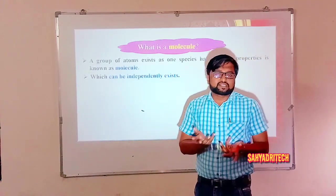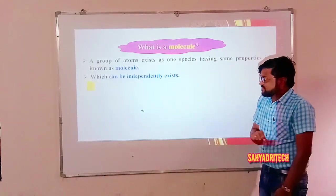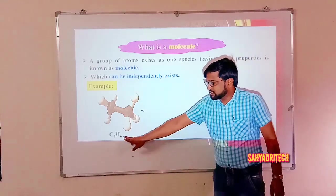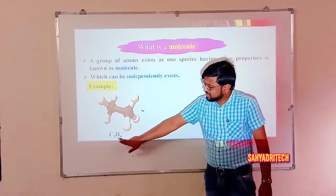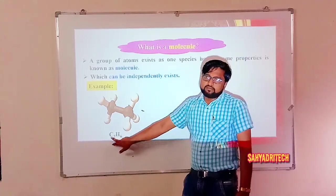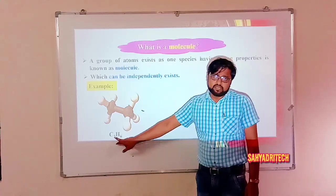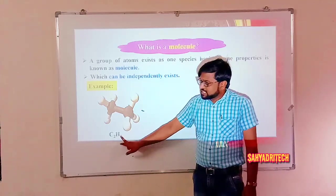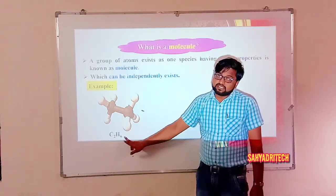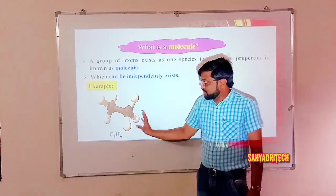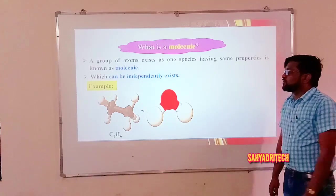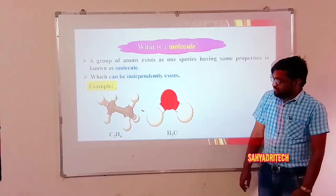A group of atoms existing as one species is considered a molecule. For example, the molecule of ethane, C2H6: individually, two carbon atoms and six hydrogen atoms are unstable, but when they combine the resultant is a stable molecule — we call it the ethane molecule.